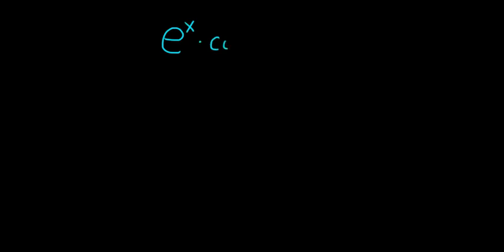Hi everyone. In this video we're going to find the Maclaurin series for the function e to the x times the cosine of x. We'll actually find the first four non-zero terms of the Maclaurin series. Let's go ahead and carefully work through it.